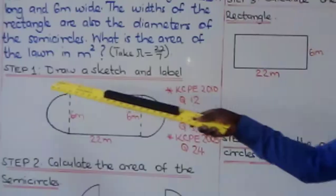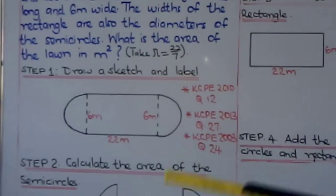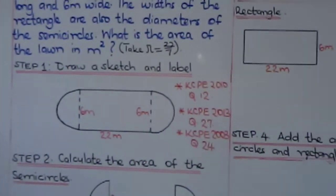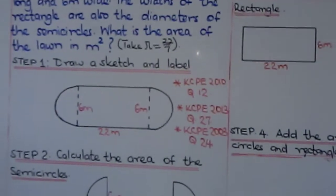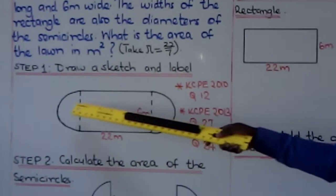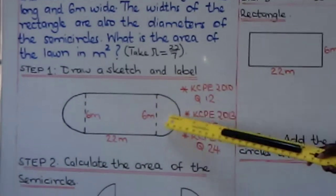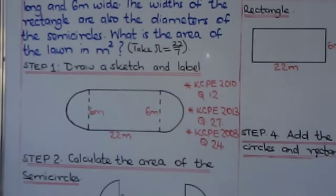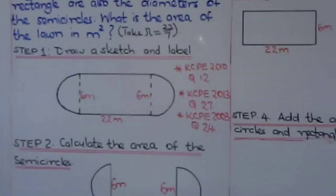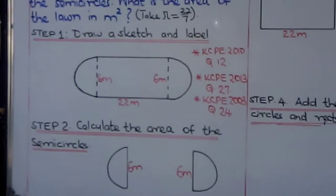The first step is to draw a sketch and label it as I have drawn here. The lawn has the widths of the rectangle also as the diameters of the semicircles — that's why it looks like a running track. Step number two: calculate the area of the semicircles.